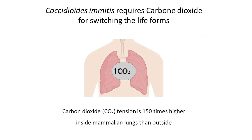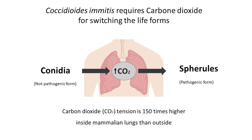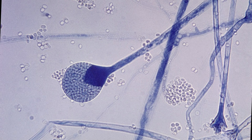For instance, carbon dioxide tension is 150 times higher inside mammalian lungs than outside. For Coccidioides immitis, the conversion from conidia to spherules requires not only a temperature shift to 37 degrees Celsius, but also an increase in CO2 tension. Without high CO2, conidia germinate into mycelia instead of spherules.